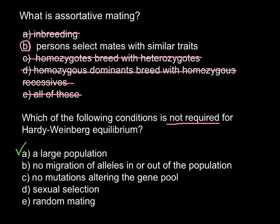Answer B — no migration of alleles in or out of the population — is also one of the requirements; allele frequencies shouldn't change due to immigration. Answer C — no mutations altering the gene pool — is also one of the requirements. We are left with two answers: sexual selection and random mating. Random mating is another requirement for Hardy-Weinberg equilibrium.